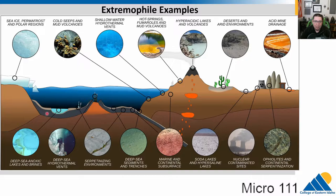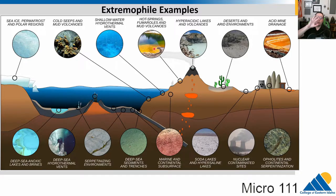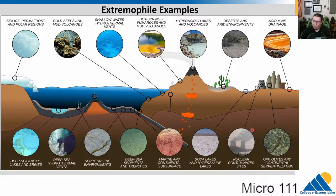Extremophiles survive under immense pressure in deep sea sediments and trenches, in volcanoes, in hot springs and fumaroles — the beautiful colors you see in Yellowstone pools come from extremophiles, both bacteria and archaea. They live in deserts with very low water, hypersaline lakes, salt flats, and can survive radiation near places like Chernobyl or Fukushima. There's even bacteria inside rocks. We see extremophiles in pretty much every environment we've sampled.